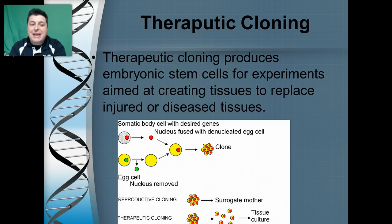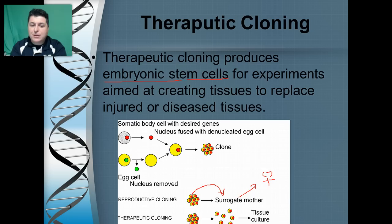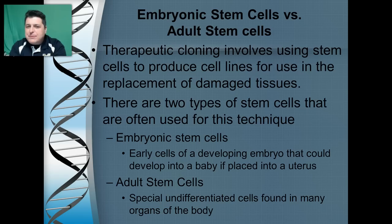The last type of cloning is called therapeutic cloning. Here we make embryonic stem cells to do experiments aimed at creating tissues to replace injured or diseased tissue. With reproductive cloning, the end goal is to have embryos implanted into a surrogate mother and develop into a healthy baby. With therapeutic cloning, we break up those embryo cells and use them in culture to create new cells — like heart cells, lung cells, or kidney cells.